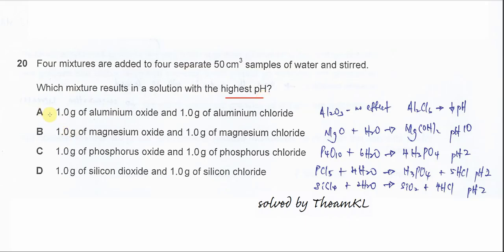For the first one, 1.0 g of aluminum oxide and 1.0 g of aluminum chloride. For the aluminum oxide, it will not dissolve in water, so it will not contribute to the increase or decrease in the pH. This one will not really give any effects.